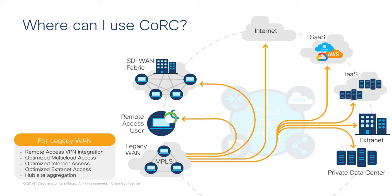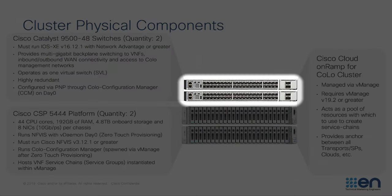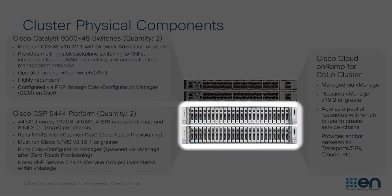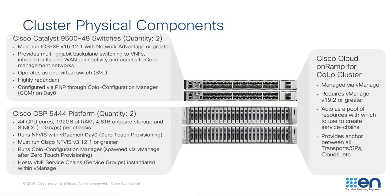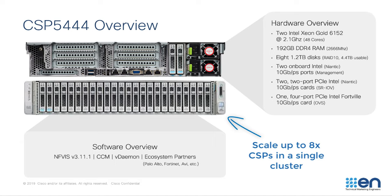Up to this point, I've been referring to Cloud onRamp for Colocation as some sort of nebulous solution — but what is it exactly? The solution, at a minimum, consists of four components: two Catalyst 9500 48-port switches and two Cloud Services Platform 5444s. These components collectively represent the Cloud onRamp for Colocation solution, often referred to as a pod or cluster. The CSPs provide compute functionality to host virtually any network function desired, provided it utilizes KVM as the hypervisor. The Catalyst 9Ks provide high-speed backplane switching between VNFs, should a customer wish to chain multiple VNFs together. A single cluster can be expanded up to eight CSPs without adding additional switches, allowing horizontal scaling for compute-heavy use cases.